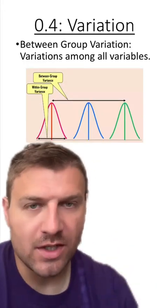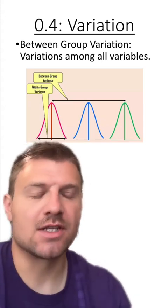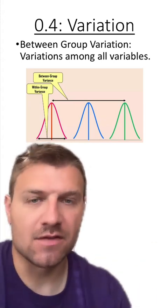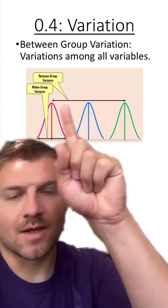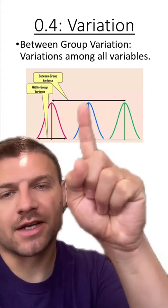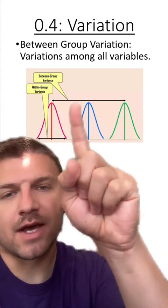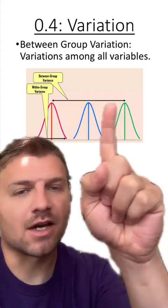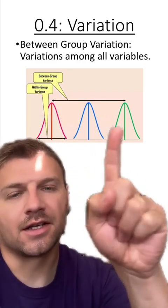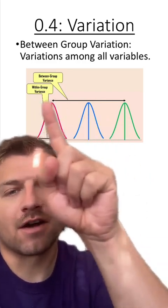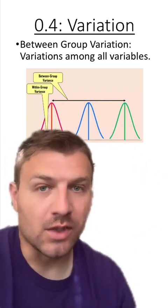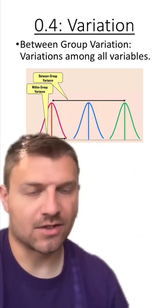Between group variation is the variation between each of the variables. In this graph, the between group variation is shown by the different colors. You can see there's a variable here, here, and here — the variation among them is called between group variation.